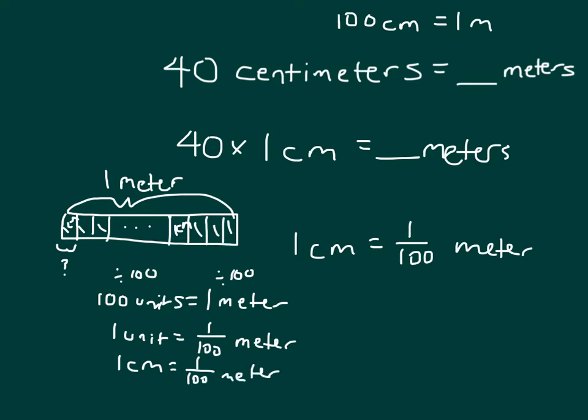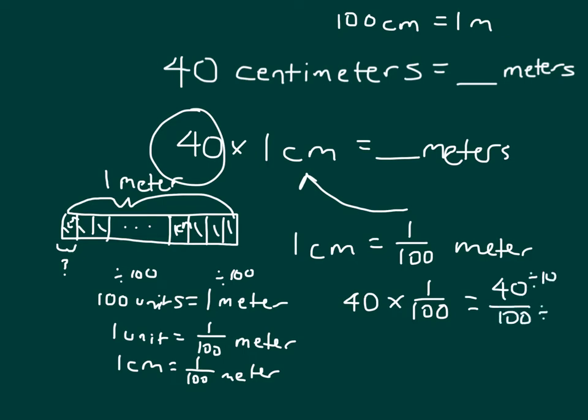Now, I'm not looking at 1 unit here, though, because I am looking at 40. And so if I replace the 1 centimeter with the one-hundredth, then I have 40 times 1 one-hundredth. Which, when we multiply out, we get 40 over 100. And then we can put that into simplest form. 40 divided by 10 is 4. 100 divided by 10 is 10. And it looks like I can simplify that even further. 4 divided by 2 is 2. And 10 divided by 2 is 5. So 40 centimeters is equal to two-fifths meters.